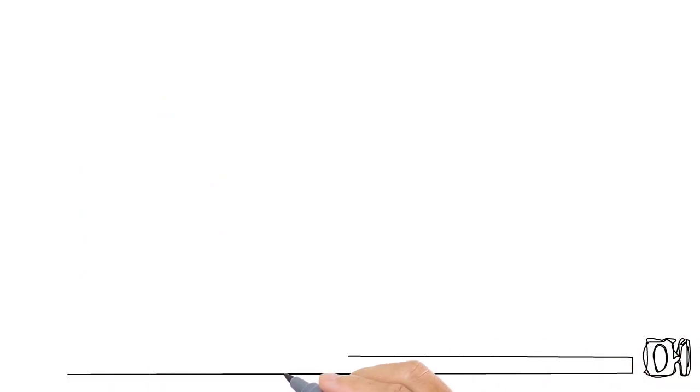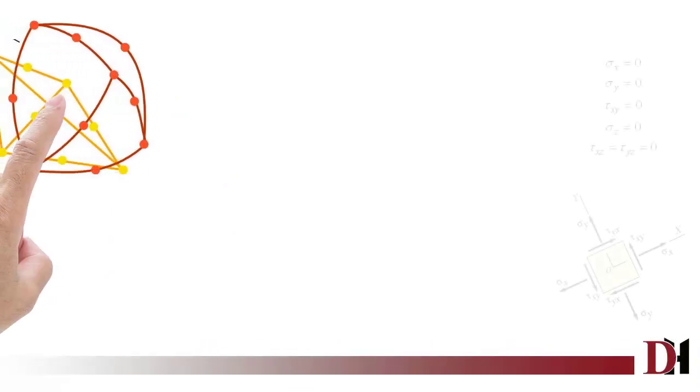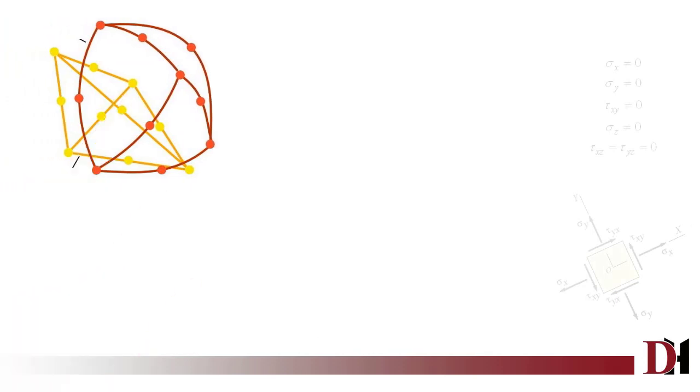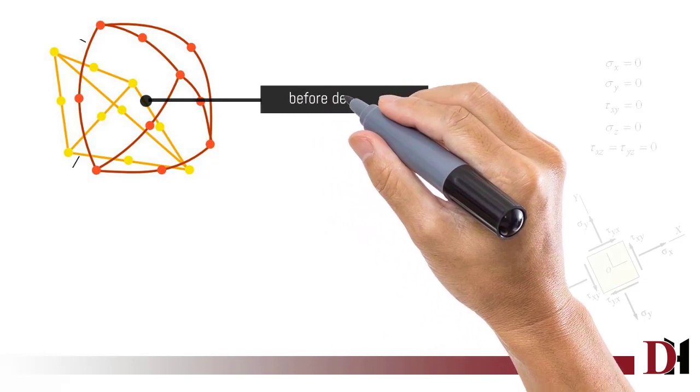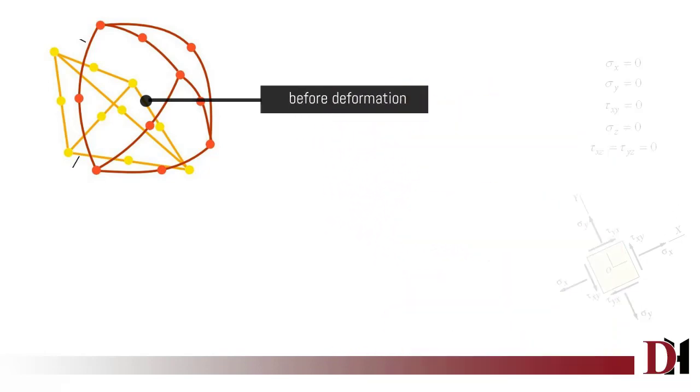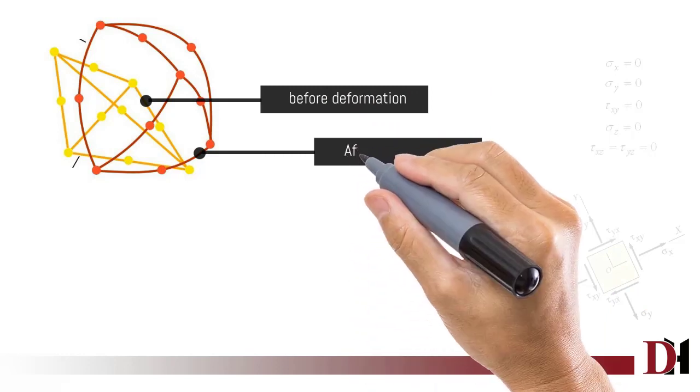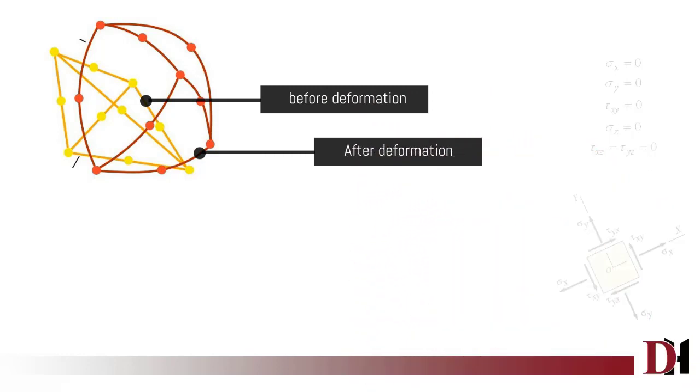Second order elements maintain accuracy before and after distortion. Due to mid nodes, they have good chances of capturing curvature.